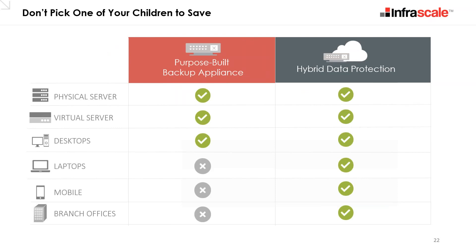This chart is labeled 'don't pick one of your children to save.' With many backup solutions you have to make a choice — a typical purpose-built backup appliance protects physical and virtual servers and maybe some desktops, but doesn't protect road warriors, mobile users, or often branch offices. It just doesn't make sense to protect only one pool of data. You need a solution that can protect all of your data and doesn't ignore any of it.